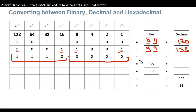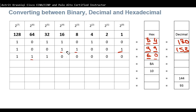For the next one, on the right side there's nothing, so that's 0. On the left side: 8 plus 4 is 12, plus 2 is 14, which is E in hexadecimal — so E0. To convert to decimal: 128 plus 64 is 192, plus 32 is 224. That's 224 in decimal.